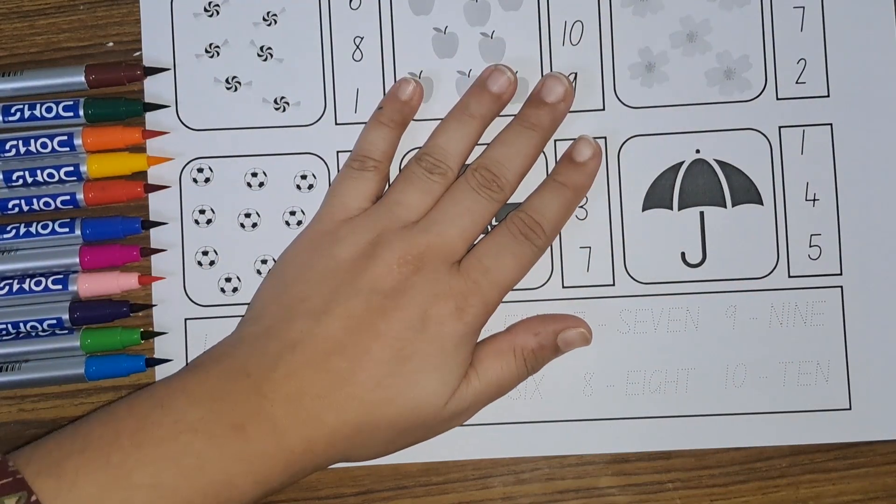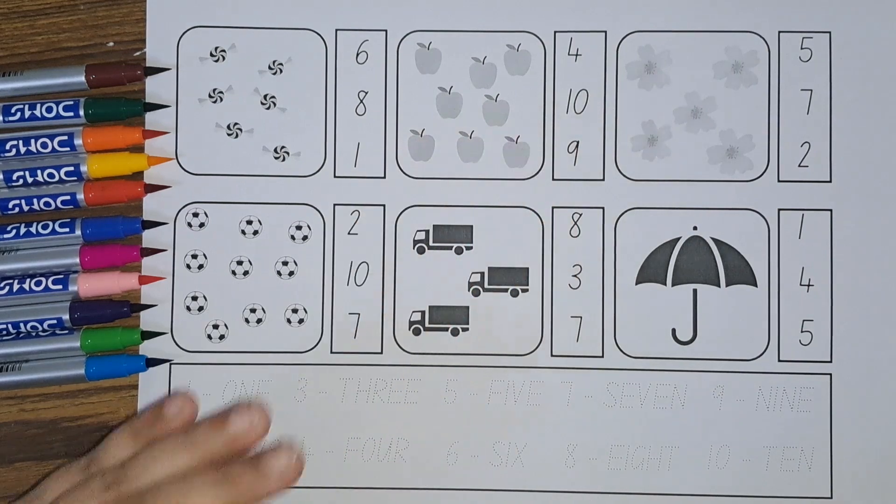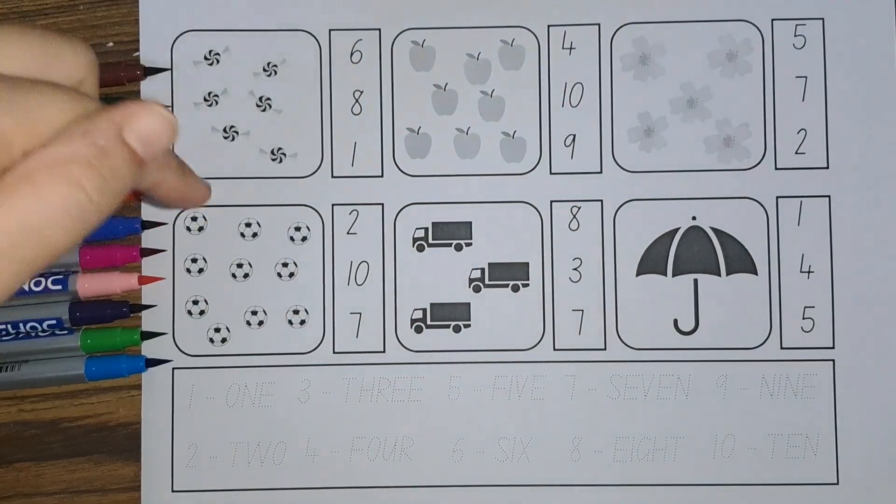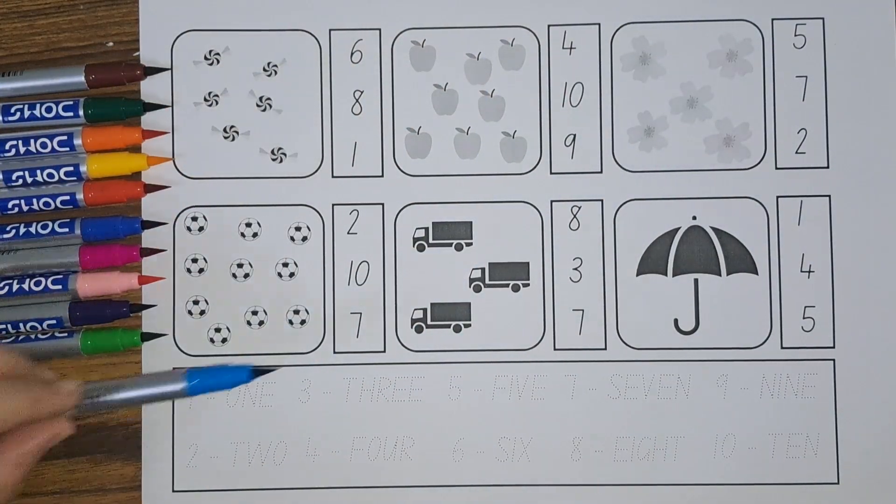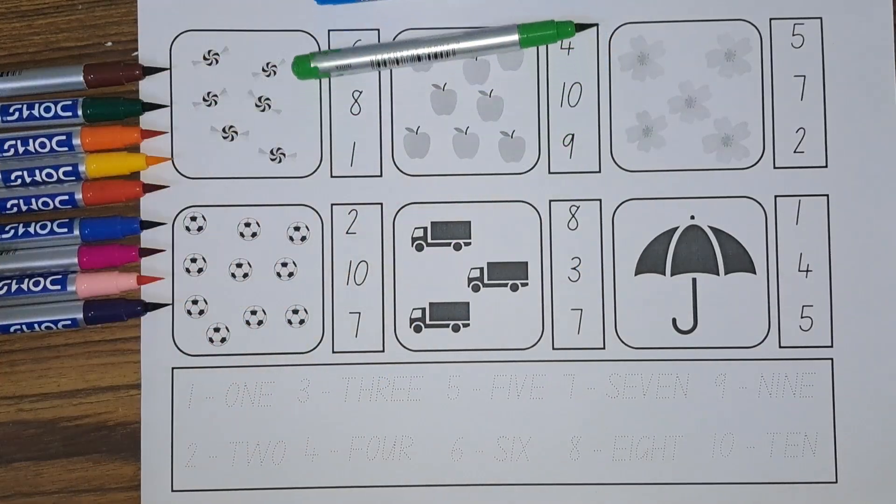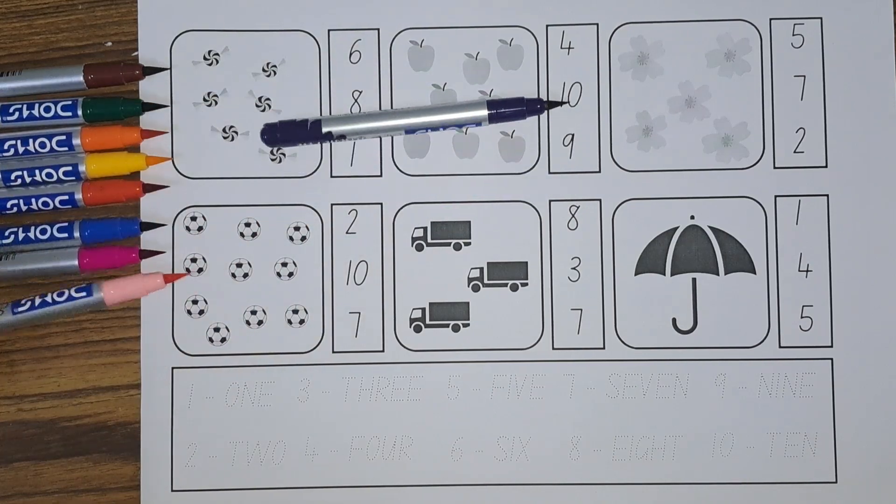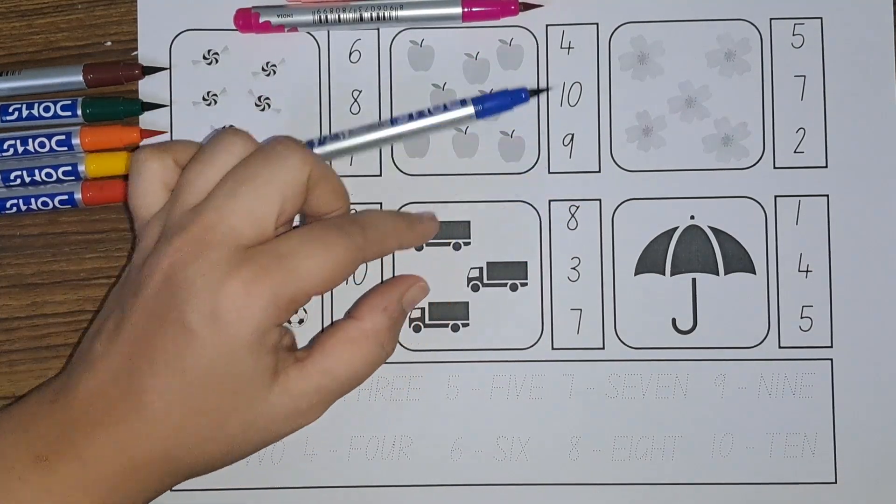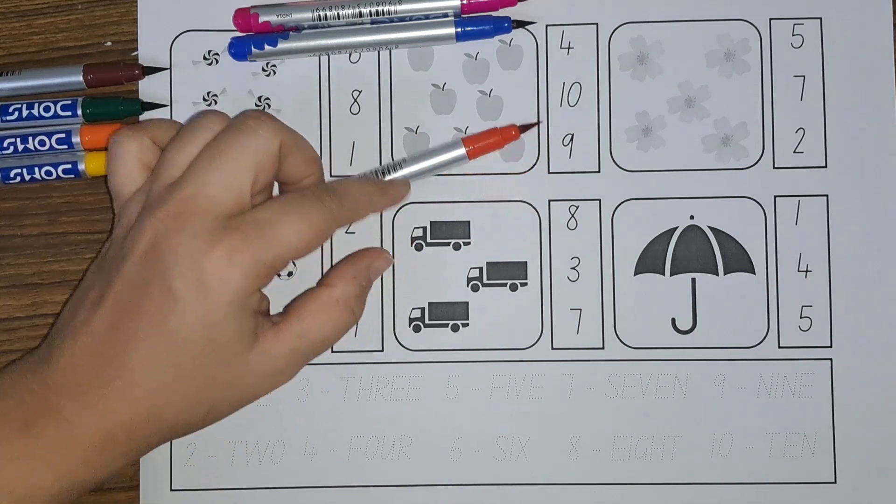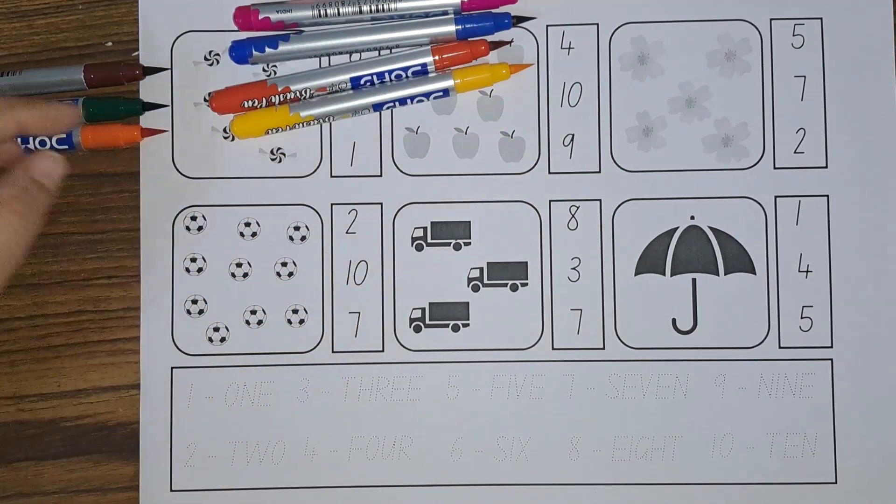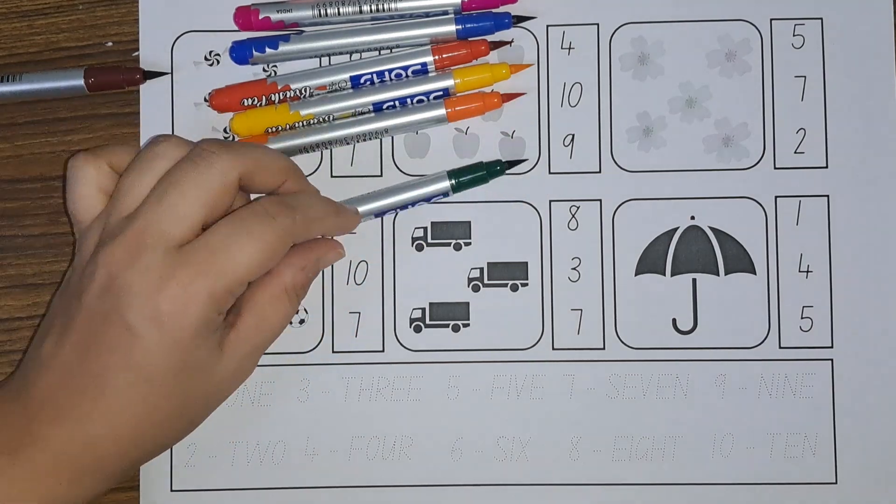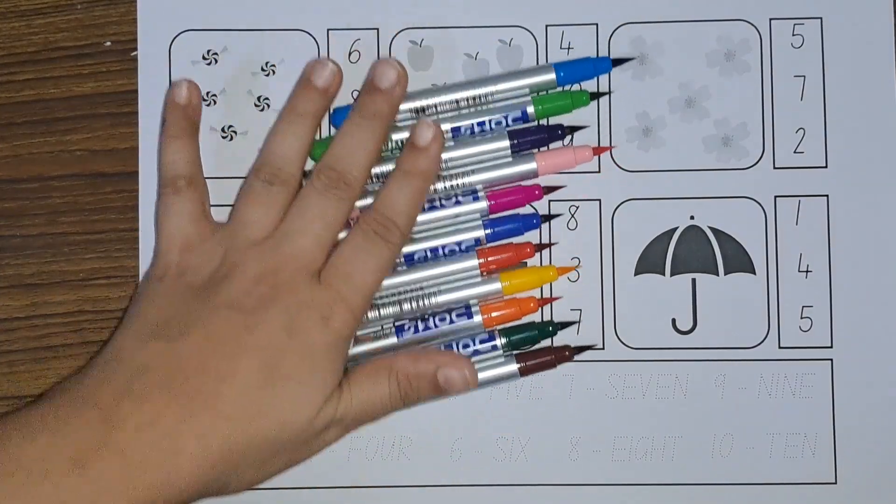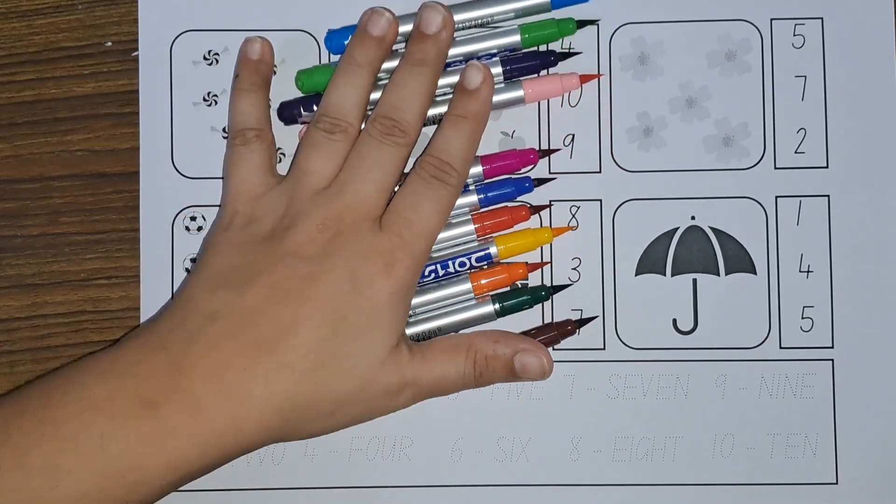Hey kids, how are you today? Today we will learn number counting and number names. But first, let us learn some colors: light blue, light green, purple, peach color, pink, dark green, dark blue, red, yellow, orange, and brown. These are the colors, so many colors. Now let's get started.